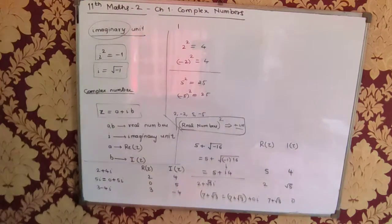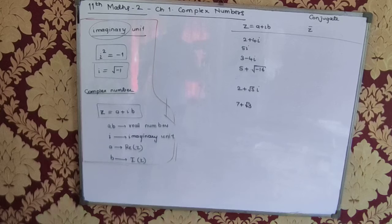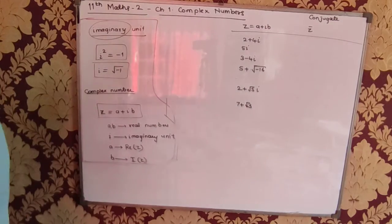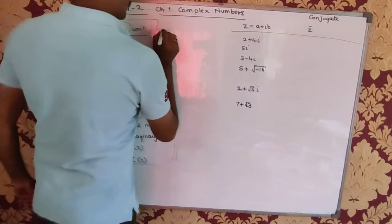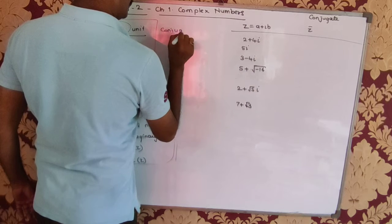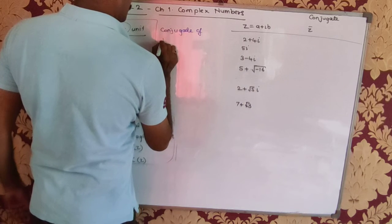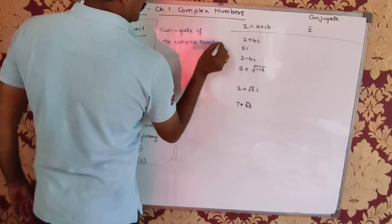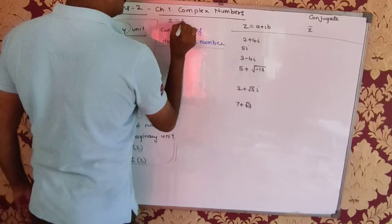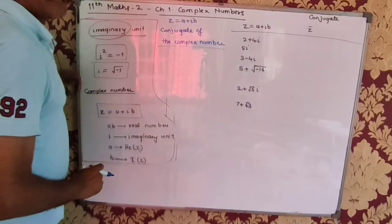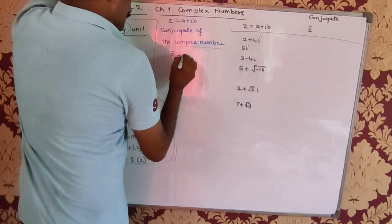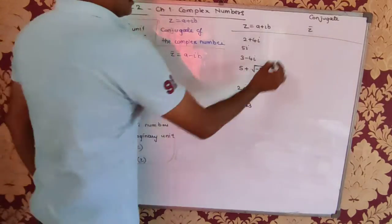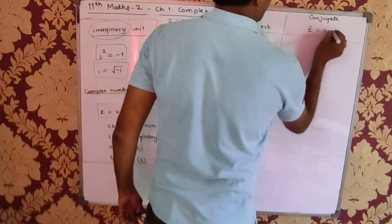This table is given on page number 1, please check that. Now we will understand a new concept called the conjugate of a complex number. Suppose the given complex number is z = a + ib. The conjugate of it is z̄ = a − ib. This is just the imaginary part's sign changed. So, complete this table: z̄ = a − ib.